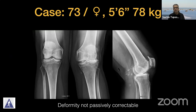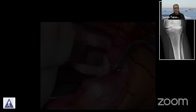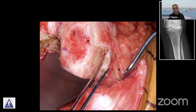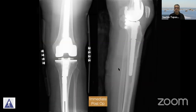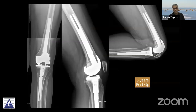Let's look at this 73-year-old lady with a normal BMI. She has a deformity which is not passively correctable. On the x-rays, this is somewhat of a type 3 valgus. She required a complete release of all soft tissues on the lateral side — we elevated all tissues from the lateral side, released it right down, and were able to achieve correction. We had to protect the lateral side with the help of a constrained prosthesis.